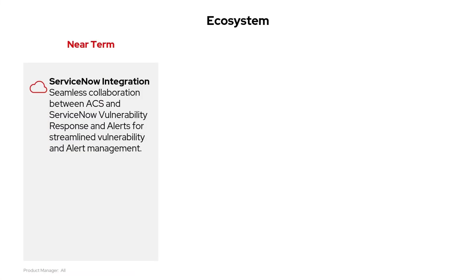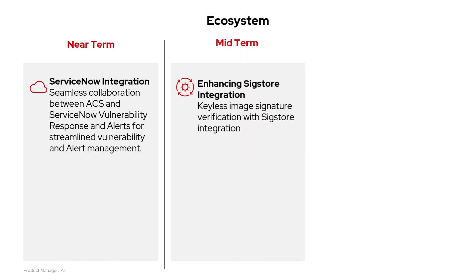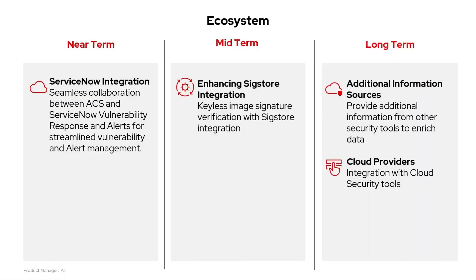On to our last topic, ecosystem. In the near term, we're looking at a ServiceNow integration, enabling seamless collaboration between ACS and ServiceNow for vulnerability response and alert management. This helps users streamline their workflows for handling vulnerabilities and alerts and enhances coordination between teams using ServiceNow. In the midterm, we're enhancing the SigStore integration by adding keyless image signature verification support to improve software supply chain security. This will help automate certificate verification by pulling short-lived keys from a record during deployment, increasing trust in image signatures without manual certificate management. In the long term, we're adding additional information sources, integrating data from other security tools to enrich ACS insights and provide a more comprehensive view of vulnerabilities and threats. Lastly, cloud providers integration expands support to integrate with cloud security tools, promoting secure best practices by using short-lived credentials with Identity Federation to enhance security and streamline cloud service integration.